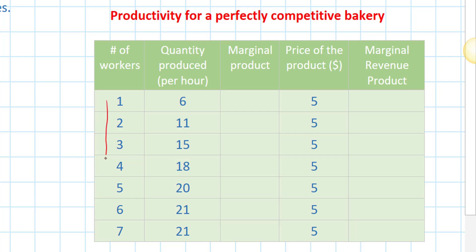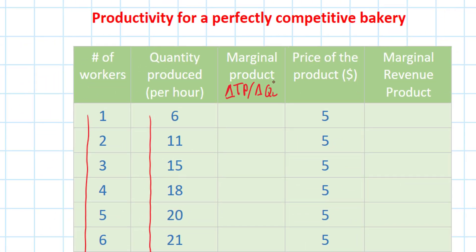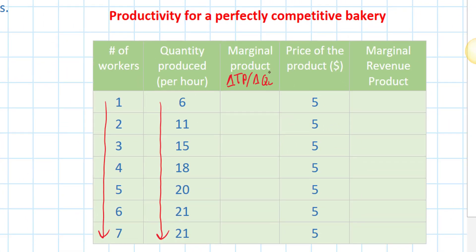First let's calculate the marginal product of labor. On the left we have the number of workers employed from 1 to 7, and the output produced in total by all the workers from 6 for the first worker up to 21 when 7 workers are employed. Marginal product is the change in total product divided by the change in the number of workers.